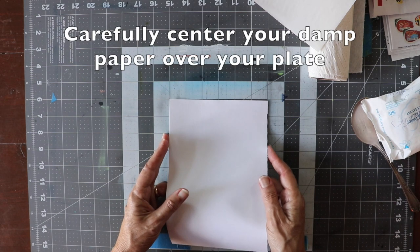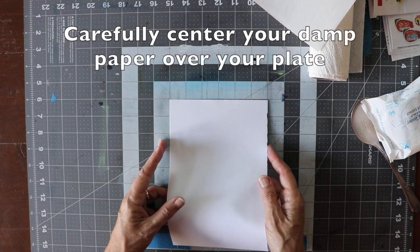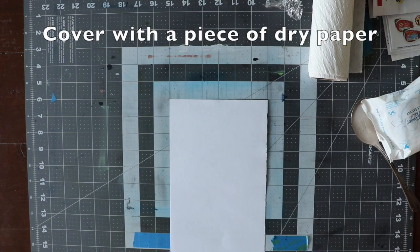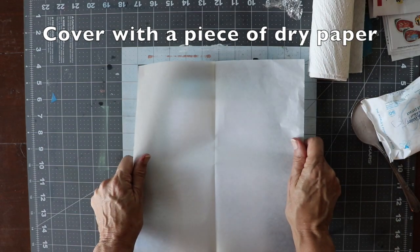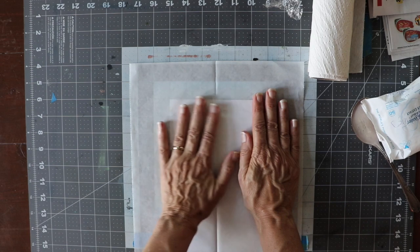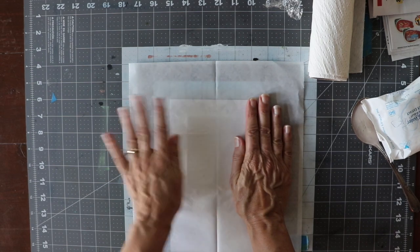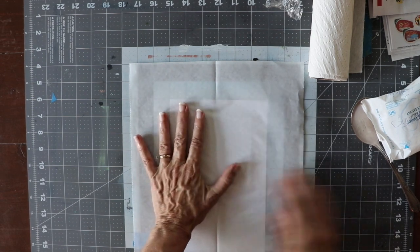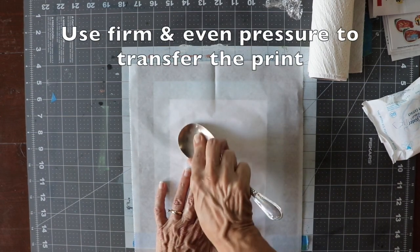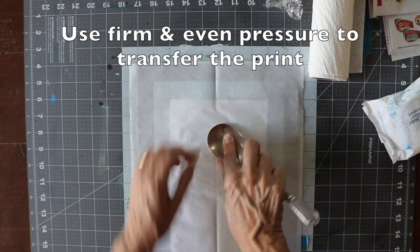Carefully center your damp paper over the plate. Cover with a piece of dry paper to prevent your print paper from shifting while you're pressing it. Use firm and even pressure to transfer your image to the printing paper.